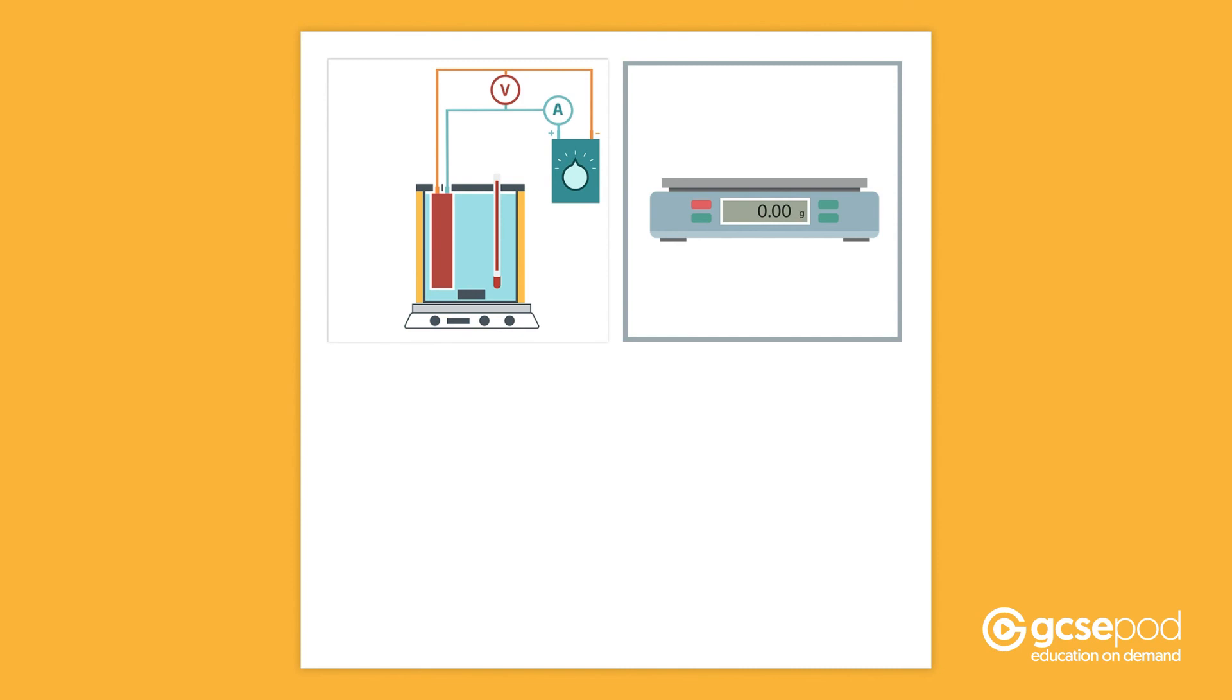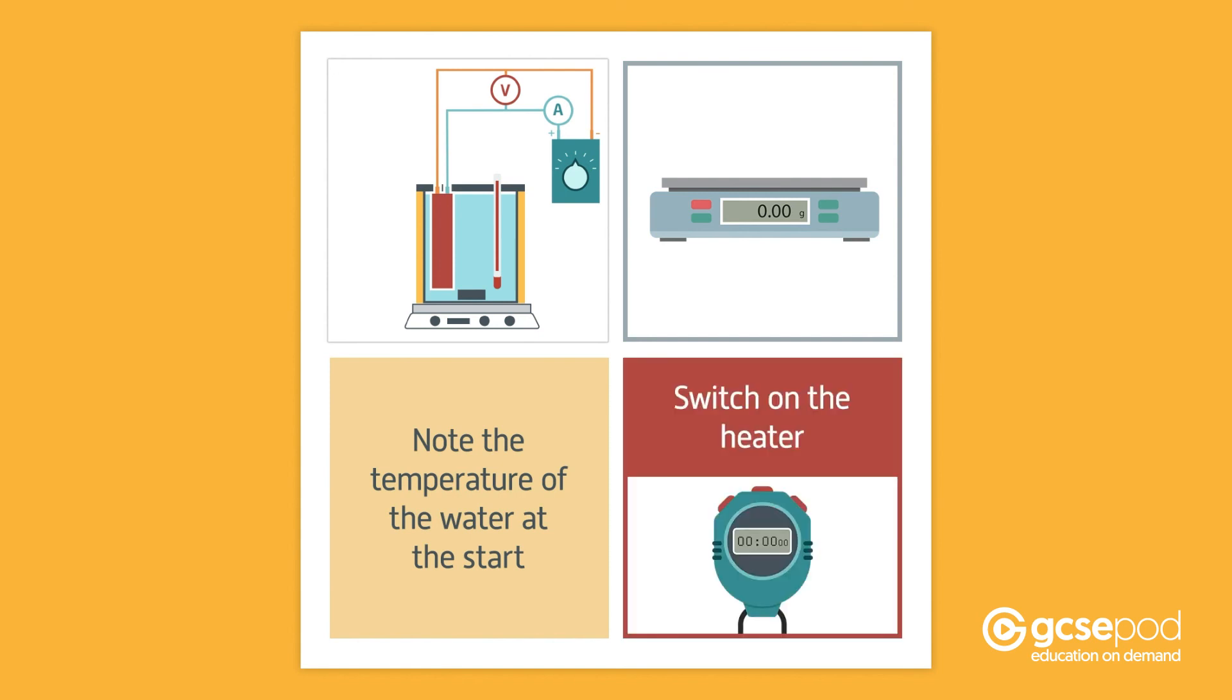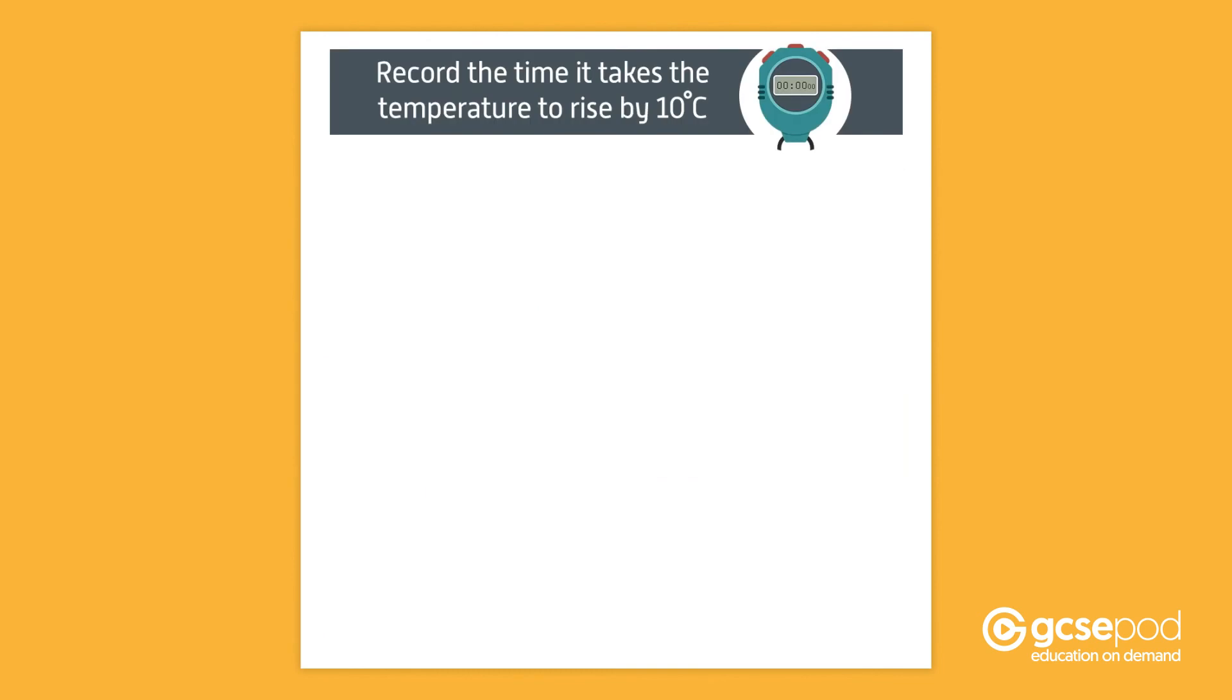The mass of water is found using a laboratory balance. The apparatus is set up and the temperature of the water obtained and noted at the start. When all this has been completed and you're ready, switch on the heater and start the stopwatch. As in the previous experiment, record the time for the temperature to rise by 10 degrees Celsius and make a note of it. It's helpful to record every 60 seconds until this point or more frequently if instructed to by your teacher.